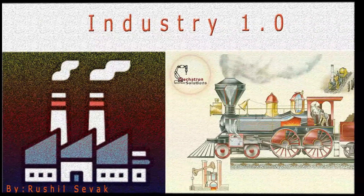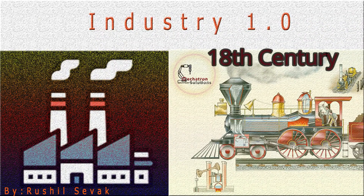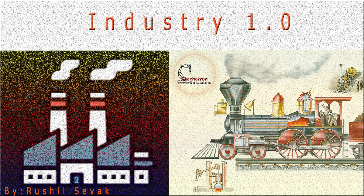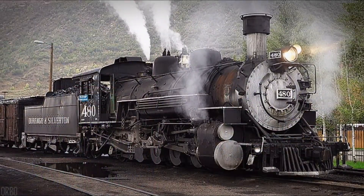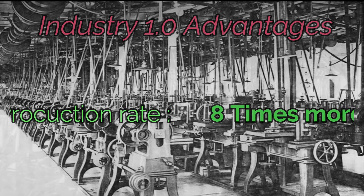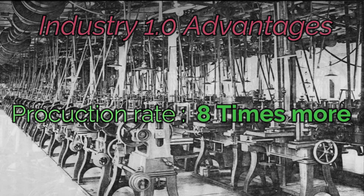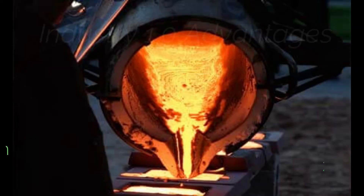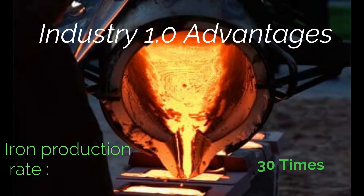The first Industrial Revolution began in the 18th century through the use of steam power and machinization in production. The machinized vision achieved 8 times more production volume in the same time than the previous production system. It also increased iron production by 30 times.